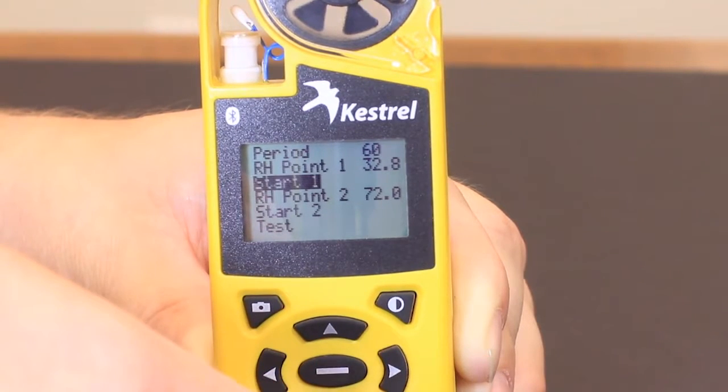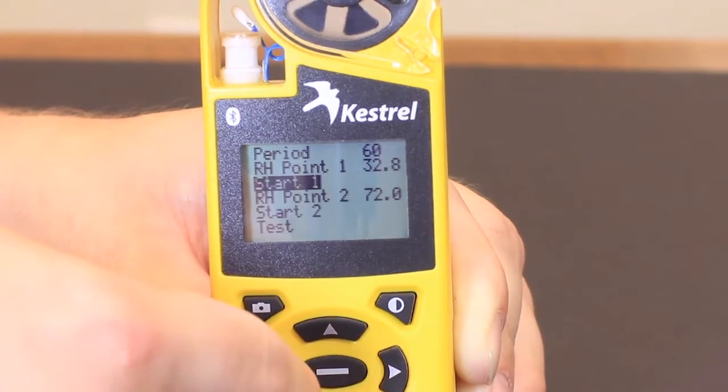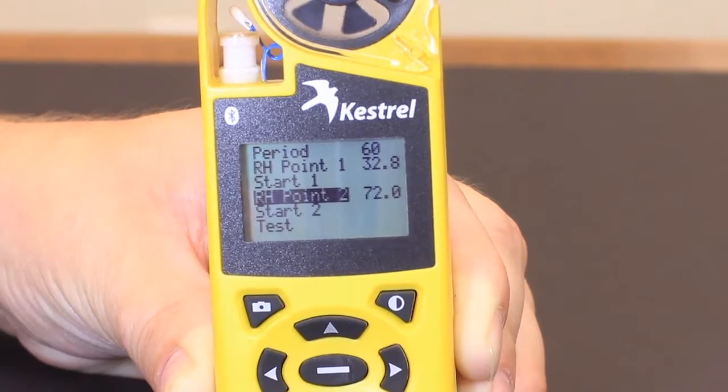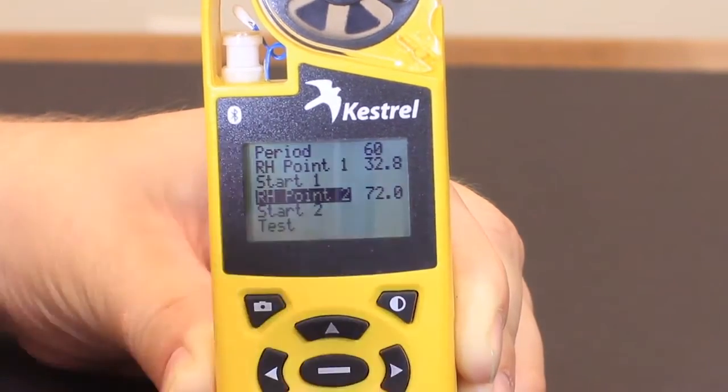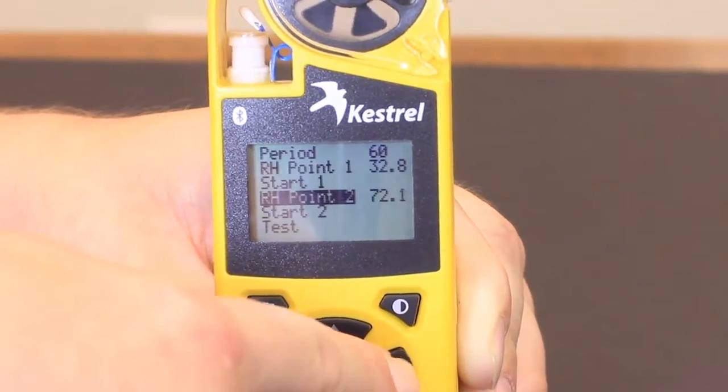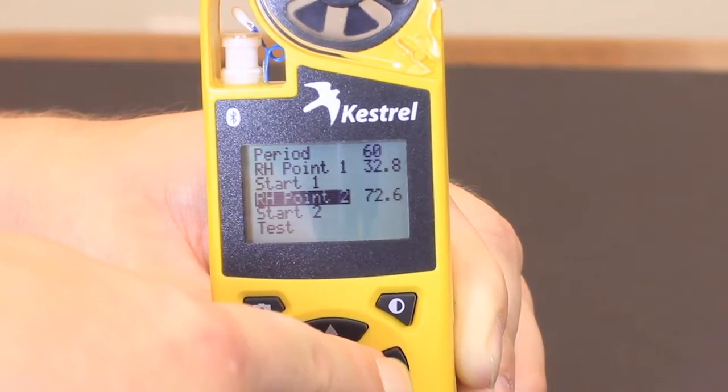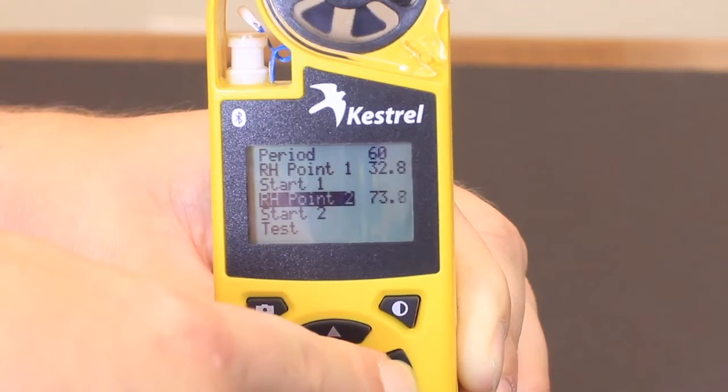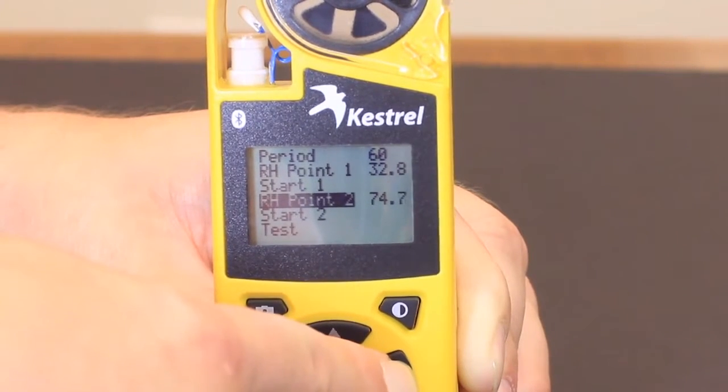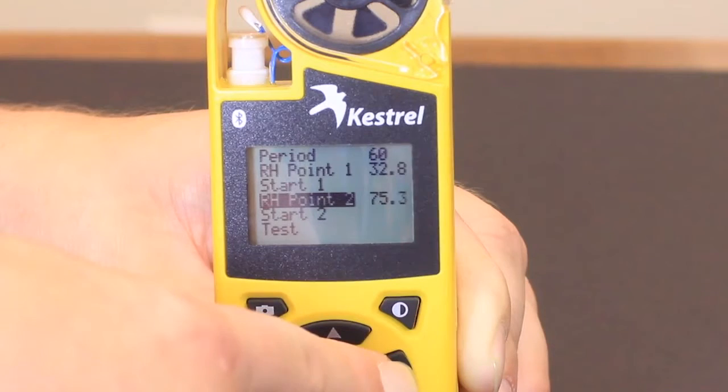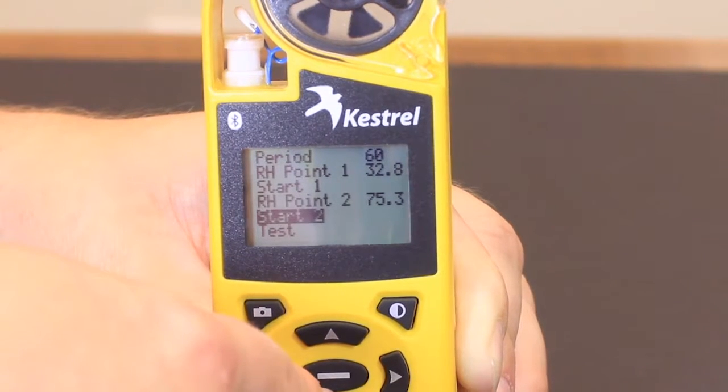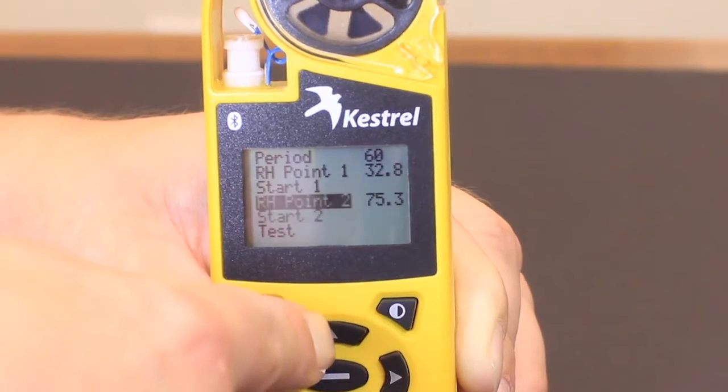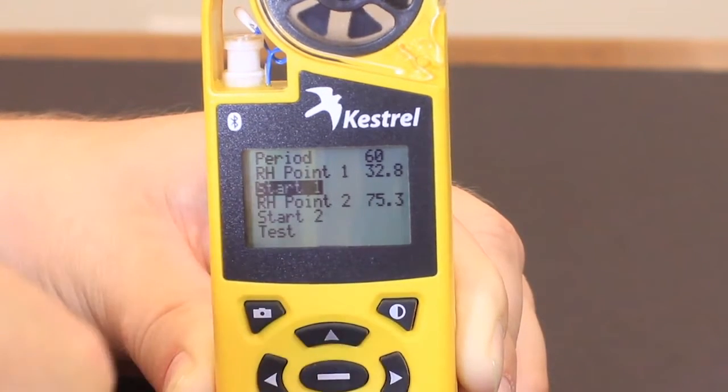Start 1 is when we're ready to do the first tank, but first we want to look at our second RH point and make sure that says 75.3. It says 72, so we're going to up it until we get the 75.3 to match what's found in the sodium chloride chamber.